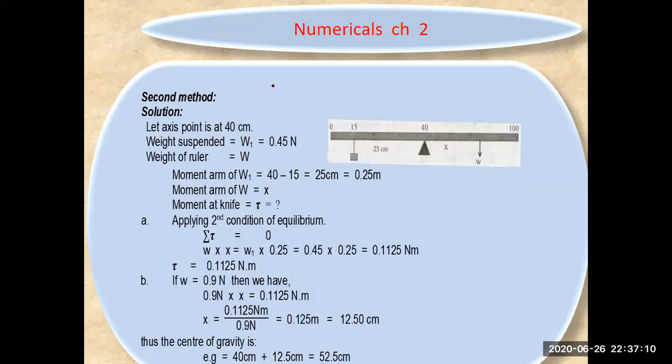This is the mass and these are the two weights. The axis point is at 40 centimeters for this one, and the weight suspended is 0.45 Newtons. The weight of the ruler is 0.9N.